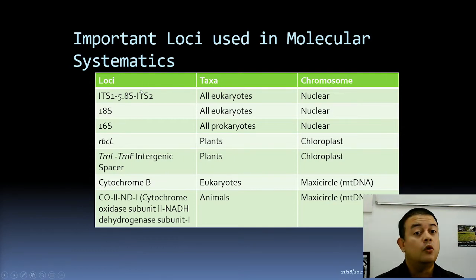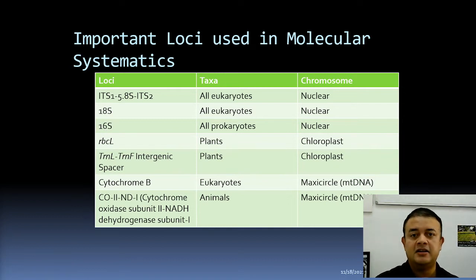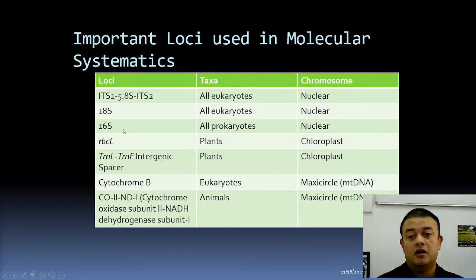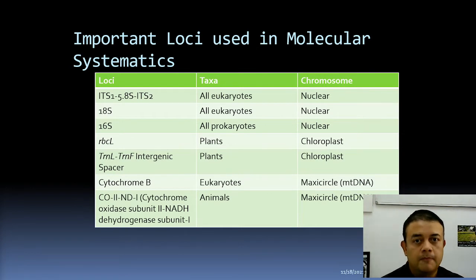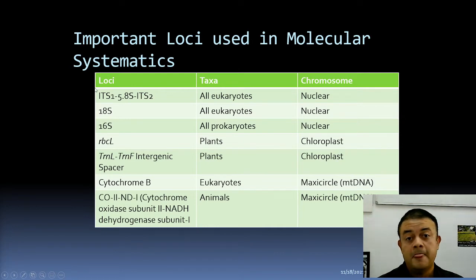The ITS region is used across eukaryotes, but not for prokaryotes. For bacteria, we use 16S, which codes for the ribosomal structural RNA — it's like a universal barcode for any bacterium. That is the only locus commonly used in DNA barcoding for prokaryotes. Prokaryotes have no nucleus, no nuclear envelope, and no organelles, so the genome organization is entirely different.